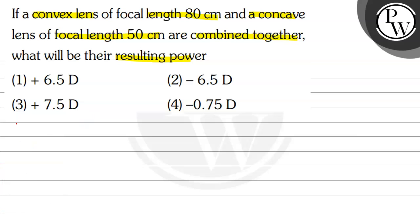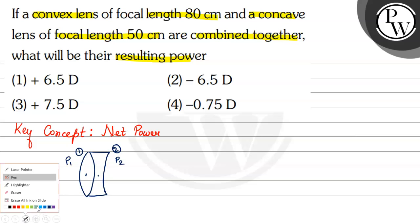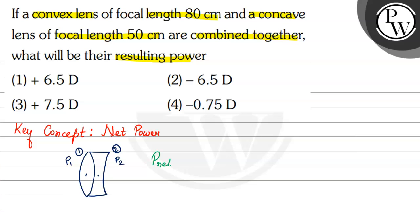तो चलिए सबसे पहले हम लोग concept को discuss करते हैं। We will learn about net power. अगर मान लो हमारे पास दो lenses हैं — be it convex, be it concave — कोई भी दो lenses हों। Lens 1 का power हम लोग P1 बोलते हैं और lens 2 का power P2। इन दोनों का जो resultant होगा, जो net power आएगा — P net — that will be equal to P1 plus P2.